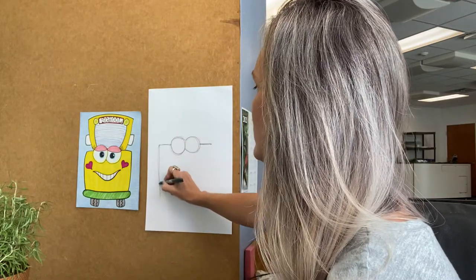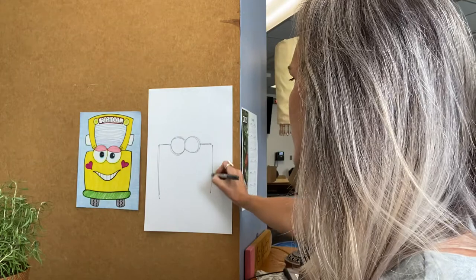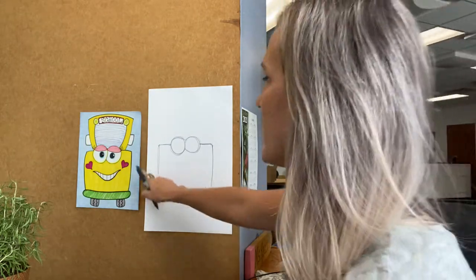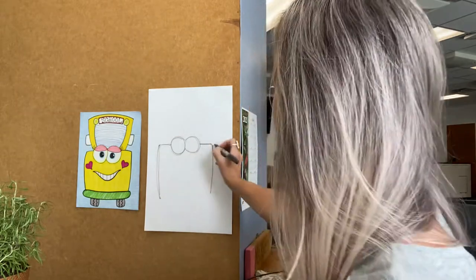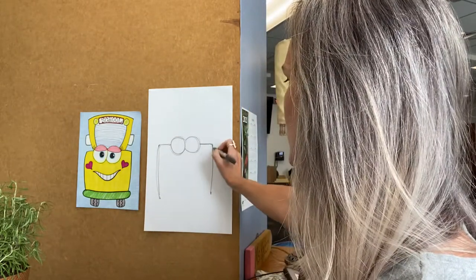A straight line down on each side and I kind of even round my lines. They're not perfectly straight down, they're kind of rounded because we want a little fat bus.